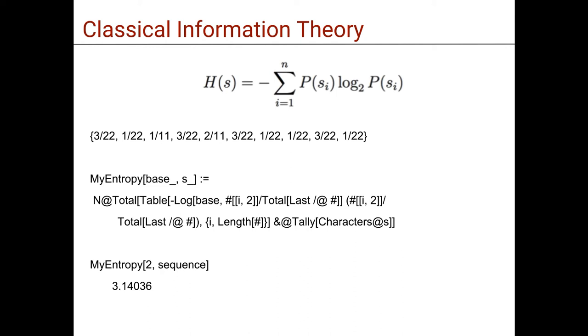We have seen thus how to arrive at the entropy function that we can write in the Wolfram language as follows, and we can directly get a value for the entropy for our example sequence. In this case our sequence of letters has Shannon entropy about 3.14.